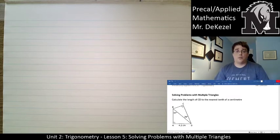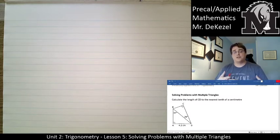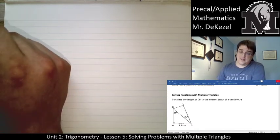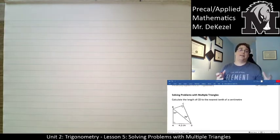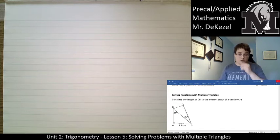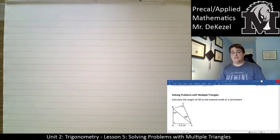For the one that you can see on the screen below me, that is a situation where we have two triangles that share a side. When that happens, you're going to need to find that shared side before you can find what the question is asking. This problem asks to calculate the length of CD to the nearest tenth of a centimeter. We only have an angle in that triangle with no side, but we do have the shared side BD with the other triangle, so we can use that information to find CD.